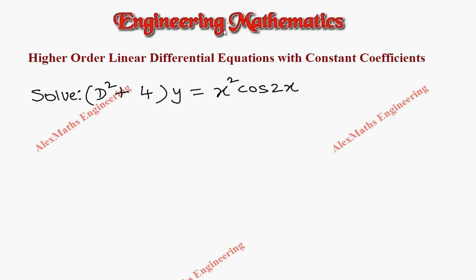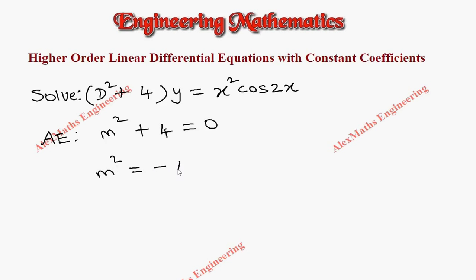Hi students, this is Alex. In this video we are going to discuss a problem where the question is: solve (D² + 4)y = x²·cos2x. First, we write the auxiliary equation: m² + 4 = 0, which gives m² = -4, so m = ±2i.